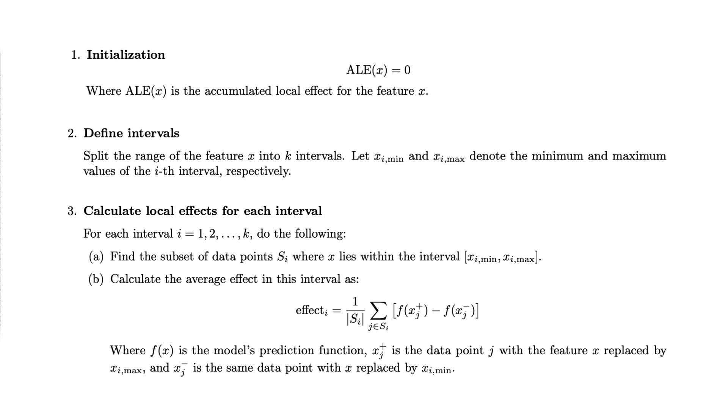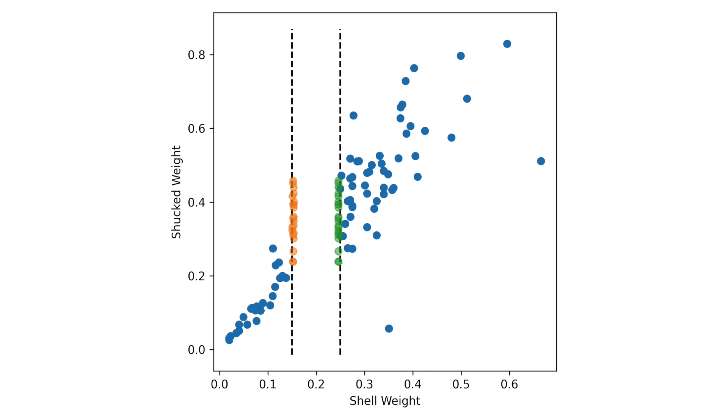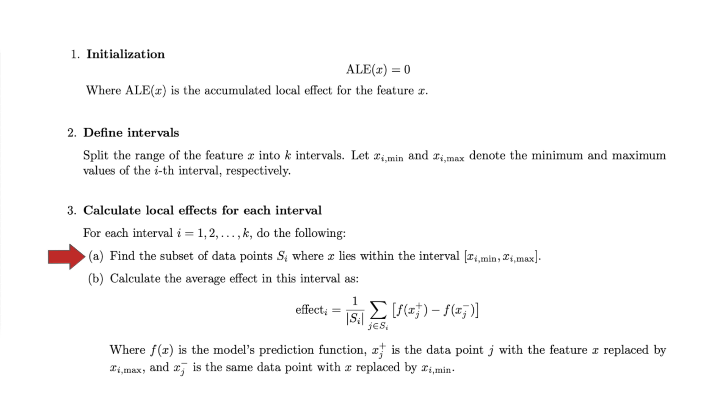Step three is to calculate the local effects for each interval. This is the process we spoke about using the orange and green dots. For each interval, we get the feature pairs by replacing the value of feature X with its maximum and minimum values. And then calculate the effect, which is the average change in the prediction.